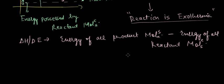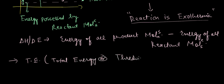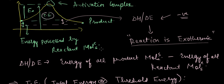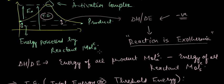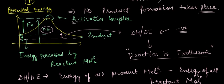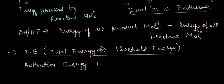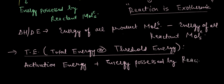Threshold energy equals activation energy plus the energy possessed by the reactant molecules. Threshold energy can also be called total energy. So the total energy or threshold energy is the activation energy required to be provided to the reactants so that we successfully create the activation complex, which is then required to form products. Activation energy plus the energy possessed by reactant molecules gives the total energy possessed by the reactant molecules at the threshold.